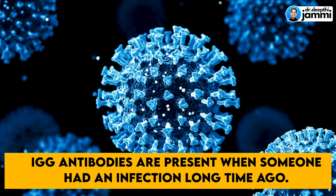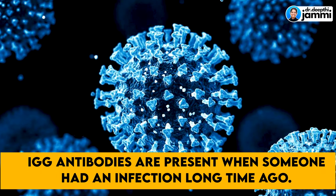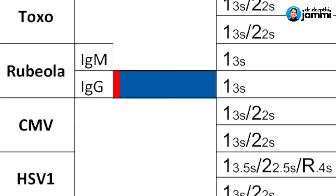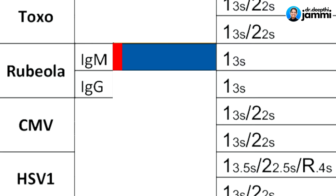If IgG is positive, that infection is chronic — the body has produced antibodies against a past infection. In routine testing, you will test IgG. If you have had the infection earlier, your body has reacted and built immunity. IgM means an acute infection.